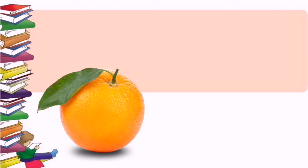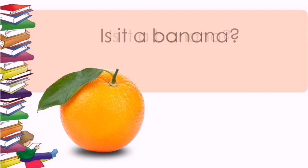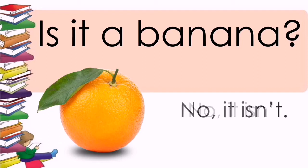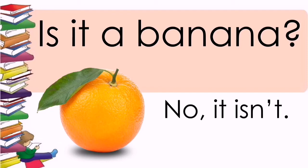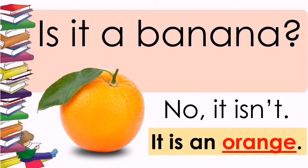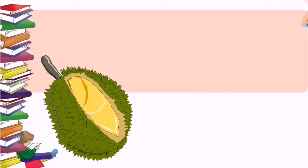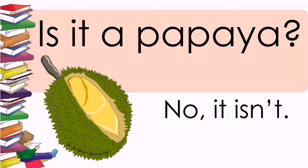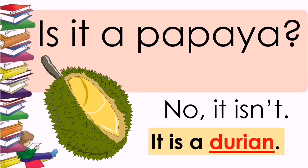Take a look at the picture. Is it a banana? No, it isn't. Then what is it? It is an orange. Good job! The next one: is it a papaya? No, it isn't. It is a durian.